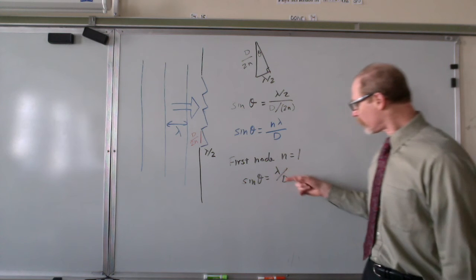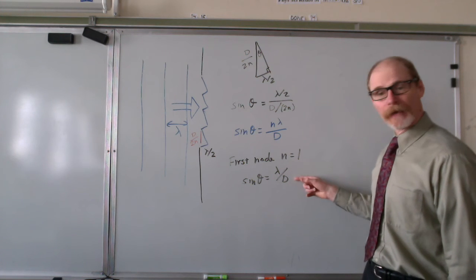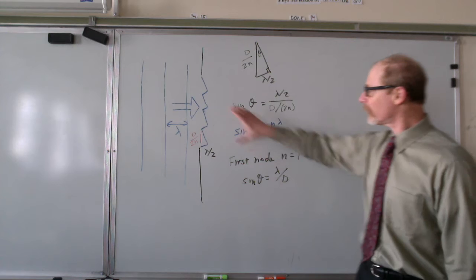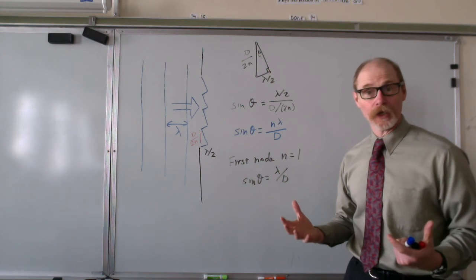So if this ratio is bigger than that, if lambda is bigger than d, in other words, if the slit width is less than one wavelength, we won't have any nodes.